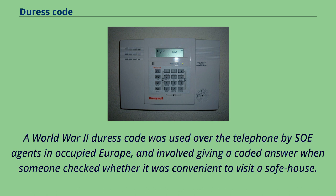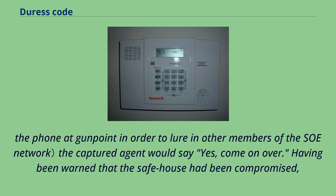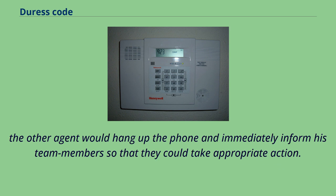A World War II duress code was used over the telephone by SOE agents in occupied Europe, and involved giving a coded answer when someone checked whether it was convenient to visit a safe house. If it was genuinely safe to visit, the answer would be 'No, I'm too busy.' However, if the safe house had been compromised — for example, the Nazis had captured it, forcing the occupants to answer the phone at gunpoint in order to lure in other members of the network — the captured agent would say 'Yes, come on over.' Having been warned that the safe house had been compromised, the other agent would hang up the phone and immediately inform his team members so that they could take appropriate action.